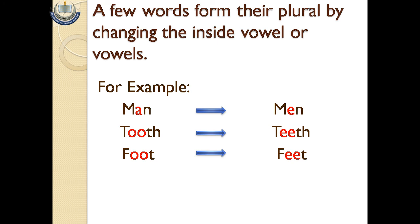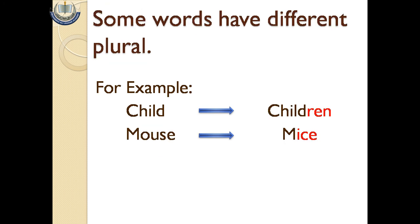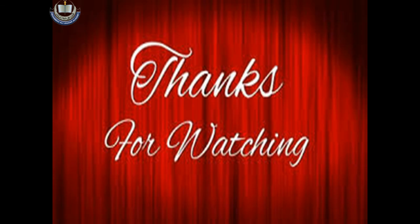Some words have different plurals. Kuch words ke plural mukhtalif hote hain. For example: child becomes children, mouse becomes mice. Here our first topic ends. I hope you all have understood this lecture. Solve the worksheet that is attached with the video and keep practicing. I will see you in the next video. Allah Hafiz.